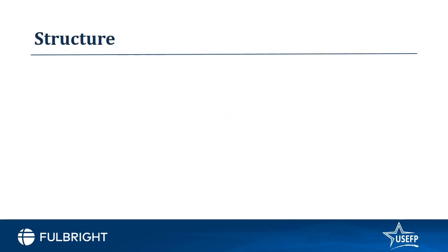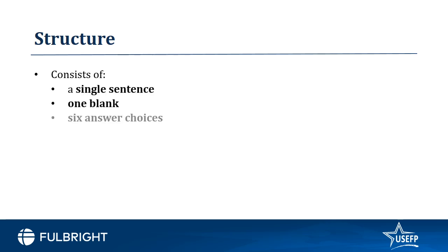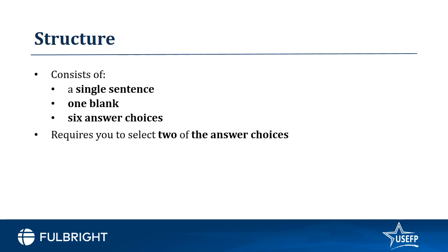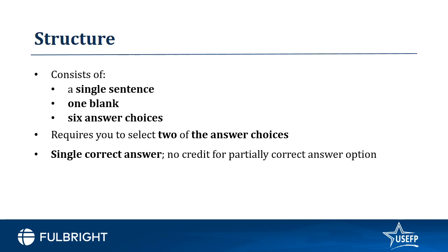To quickly refresh what we learned about the structure of sentence equivalence question types in video 5: sentence equivalence questions consist of a single sentence, they have one blank, and you have six answer choices from which you have to select two. There is a single correct answer that consists of you getting each of the selected two choices correct, and there is no credit for a partially correct answer. In this video we will look at three examples, so grab a piece of paper and a pen and let's go through the questions together.